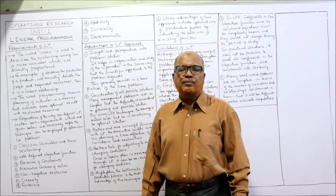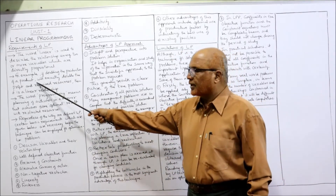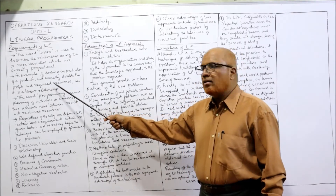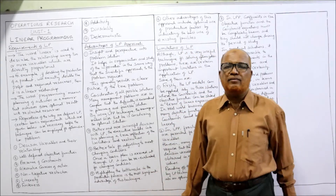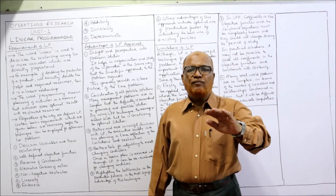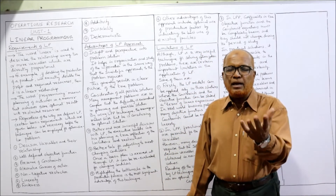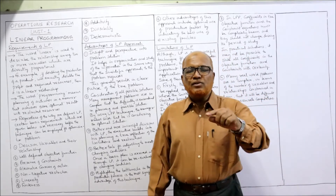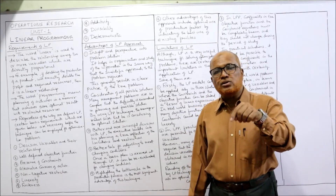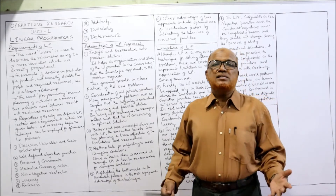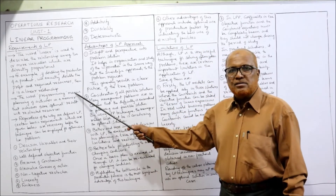For example, if variable A increases by 10%, variable B will also increase by 10% — that is directly proportional. Similarly, if we double the production of a product, it will exactly double the profit and the required resources. For example, if we are producing 1000 units and double to 2000 units, both the profit and resources used will be doubled — that is a linear relationship.